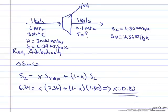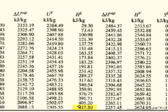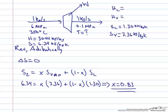Now we need the enthalpies of the liquid and vapor at saturation conditions at 0.1 MPa. Going back to the saturation steam tables, the enthalpy of saturated liquid H_L is 417.5 kJ per kg and the enthalpy of saturated vapor H_V is 2675 kJ per kg.